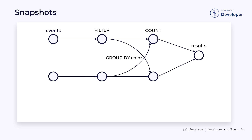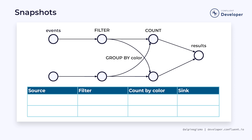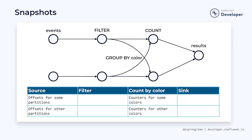The Flink runtime is automatically taking periodic snapshots of all of the relevant state. The table below the job graph shows one of these snapshots. In this example, each of the parallel sources has written into the snapshot the current offset for each partition it is responsible for. Since the filter operator is stateless, it contributes nothing to the snapshot. Each parallel counting task writes into the snapshot the counters for the colors it is responsible for. These counters reflect the state after having consumed all of the events from the sources up to, but nothing past, the offsets recorded by the source tasks.